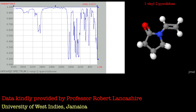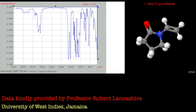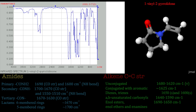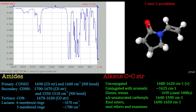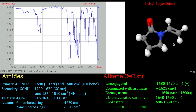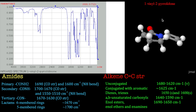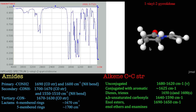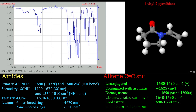Welcome to this tutorial on infrared spectroscopy. In this tutorial we're going to look at 1-Vinyl-2-Pyrrolidinone, which is a lactam — a bit like an amide — and we've also got an alkene in there as well. It's quite an interesting one because it's got several functional groups: an amine, the carbonyl, an olefinic double bond or alkene, and some aliphatic CH2s.